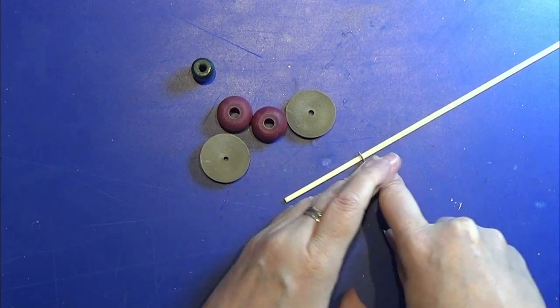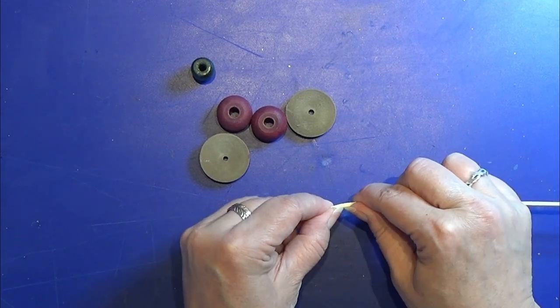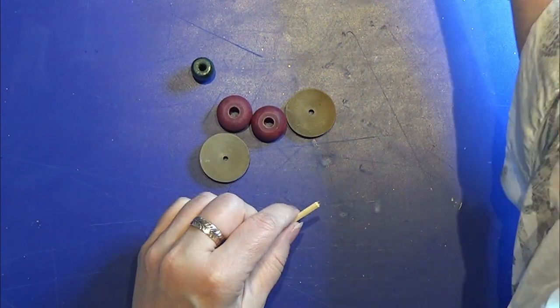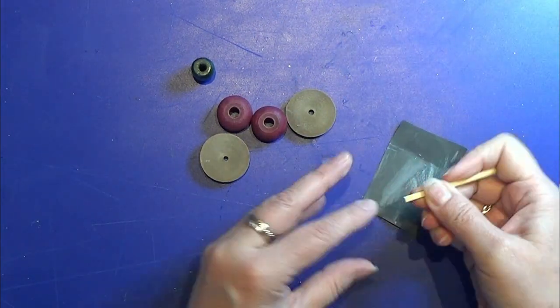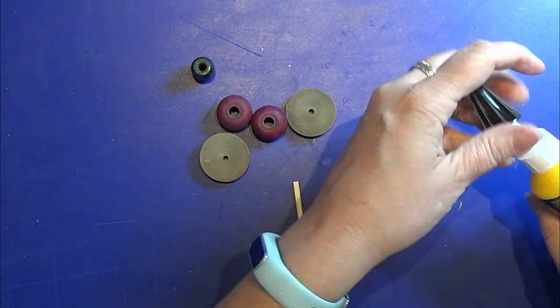For that I took this skewer and I measured 5.5 cm up and I found a few beads that I liked in my collection of wood beads. I am starting with this flat bead and I am gluing the skewer into that.